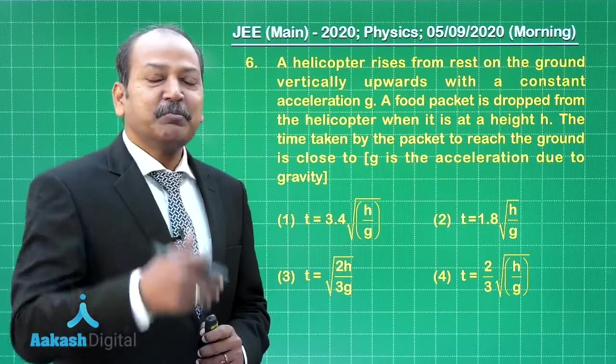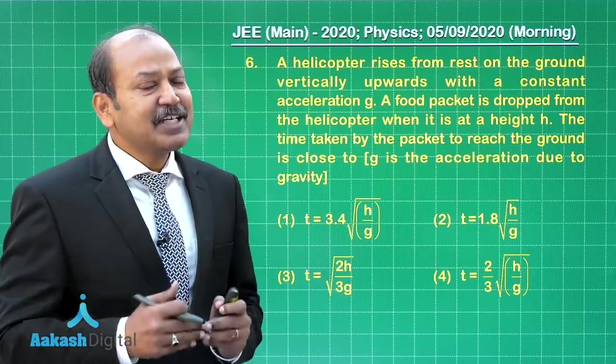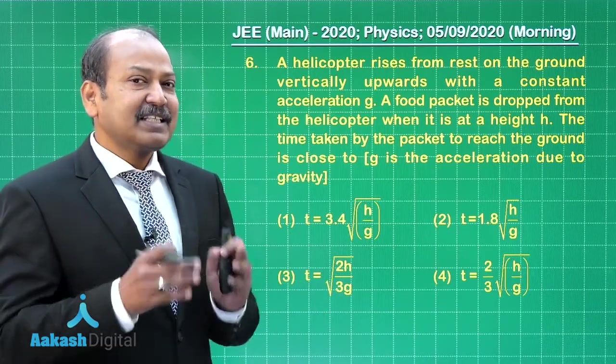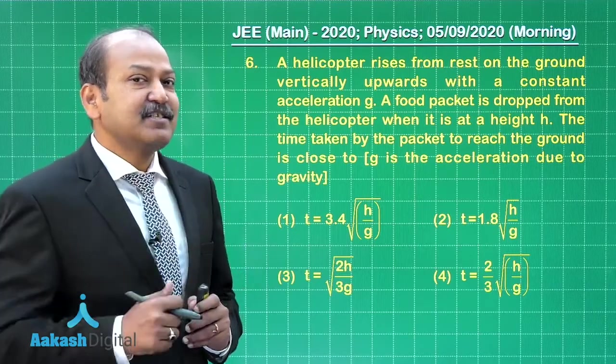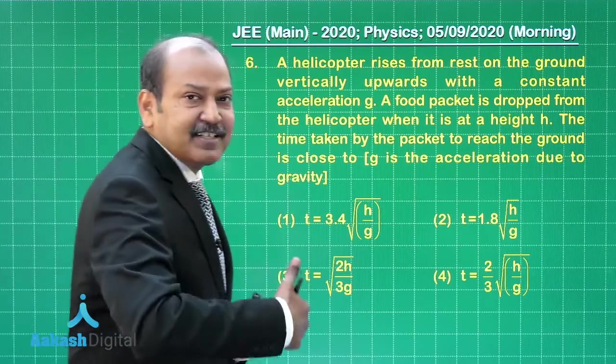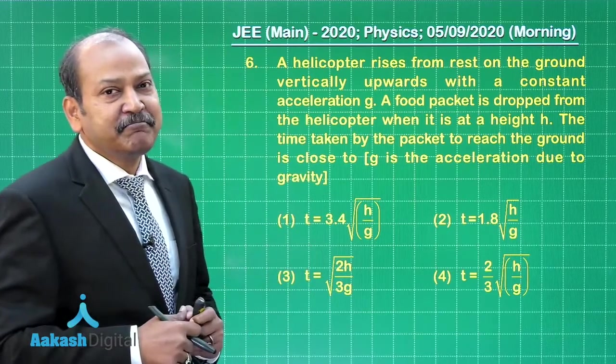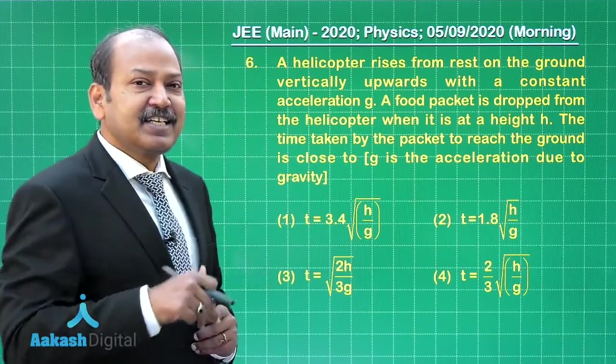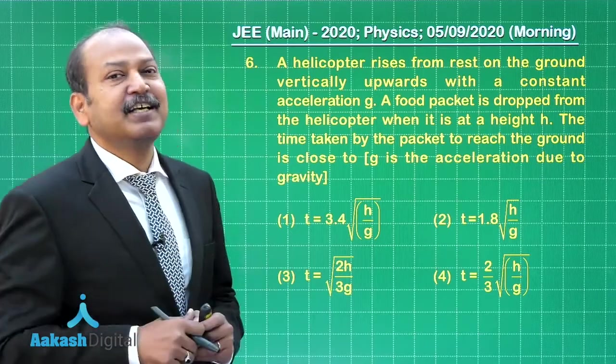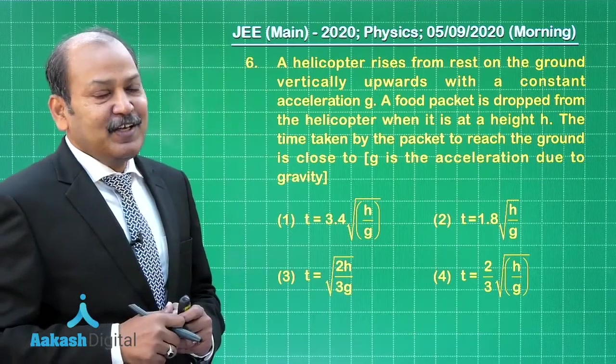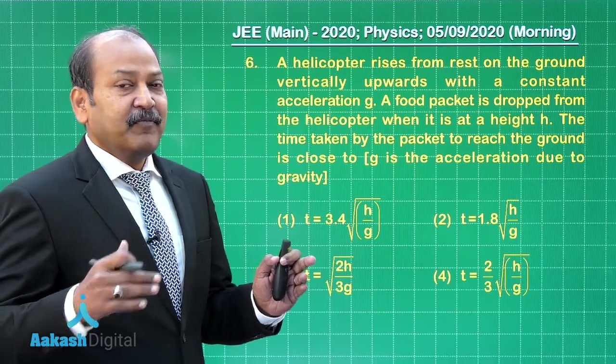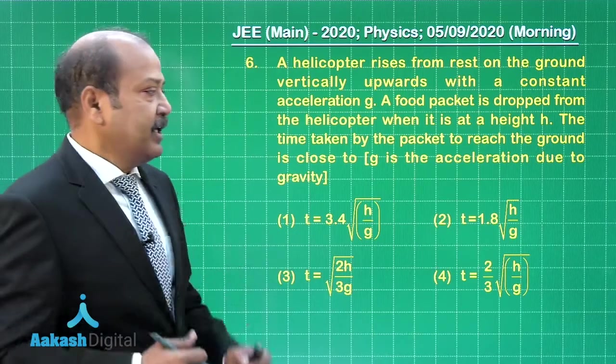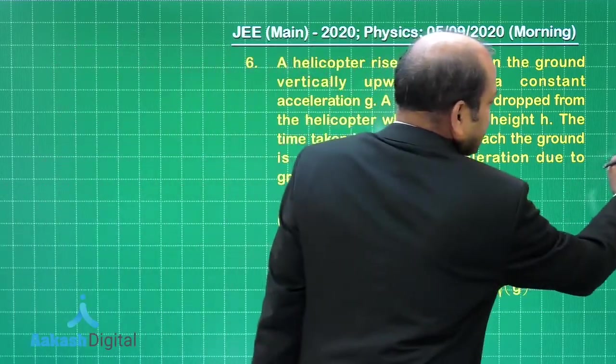The question is about motion in a straight line with uniform acceleration. Well, the acceleration is changing at an instant because initially acceleration is in the vertically upward direction with magnitude g, and once it is dropped from the helicopter, the acceleration is g but in the vertically downward direction. We have to find the time after the packet is dropped, how much time it takes to hit the ground.